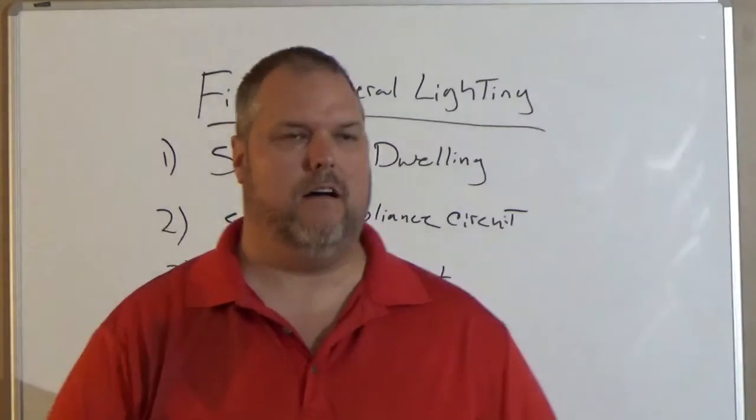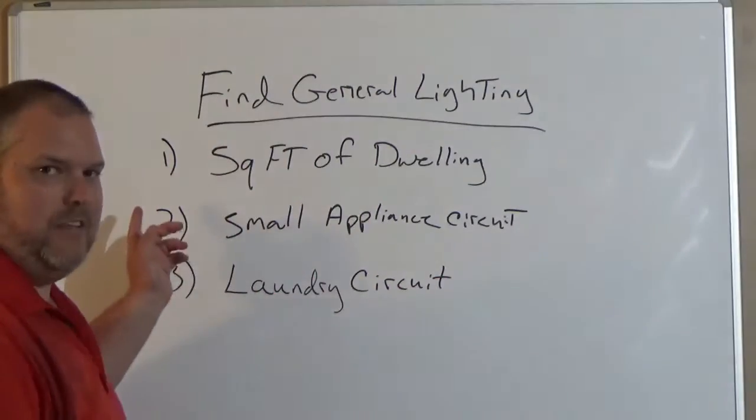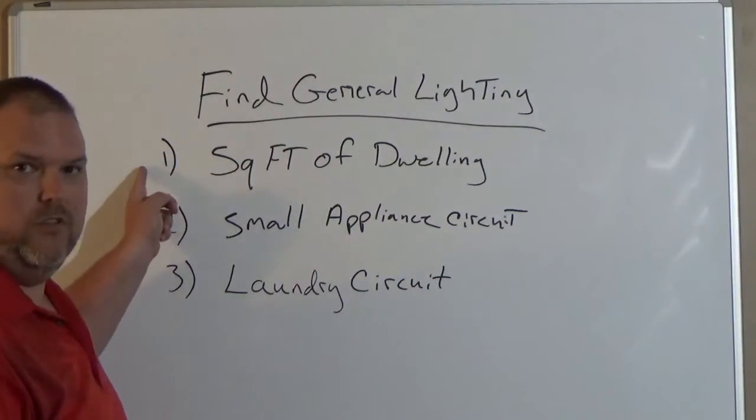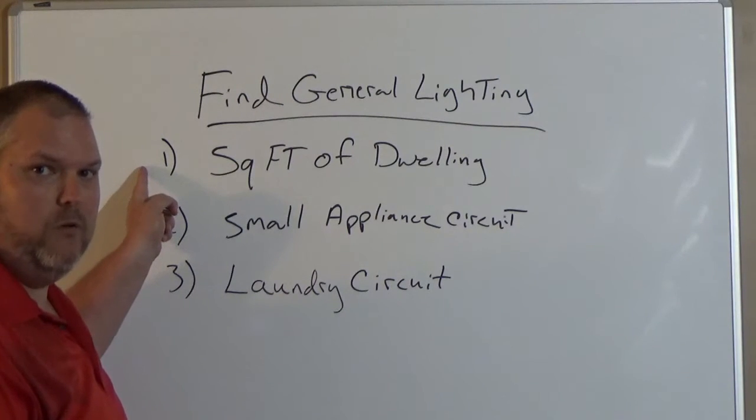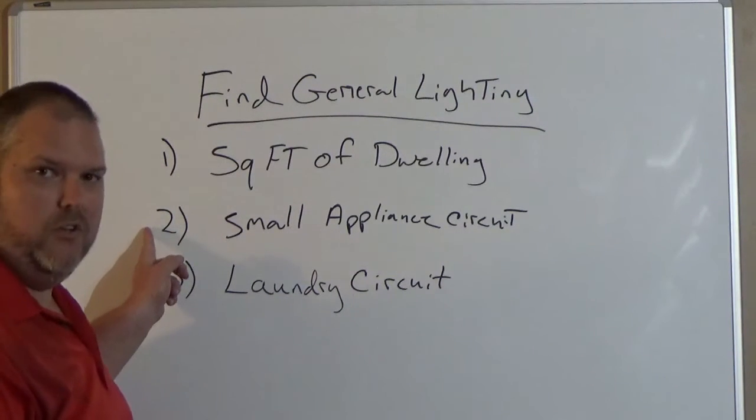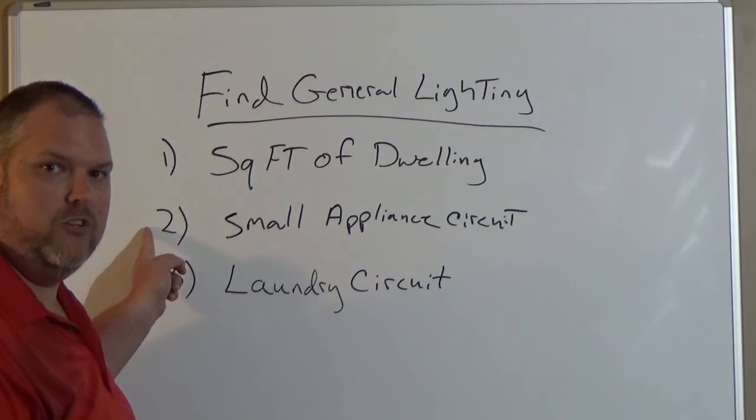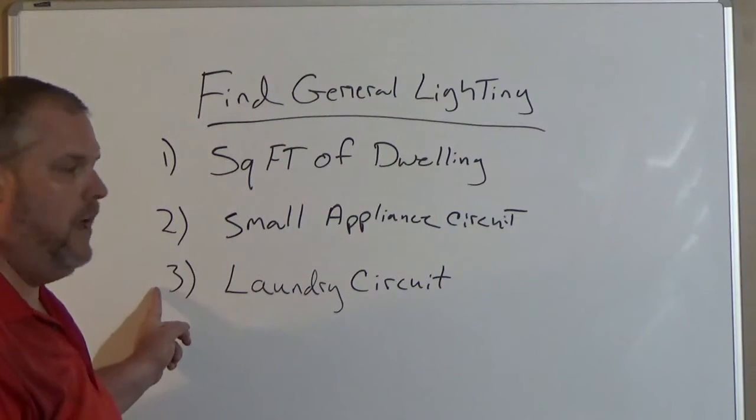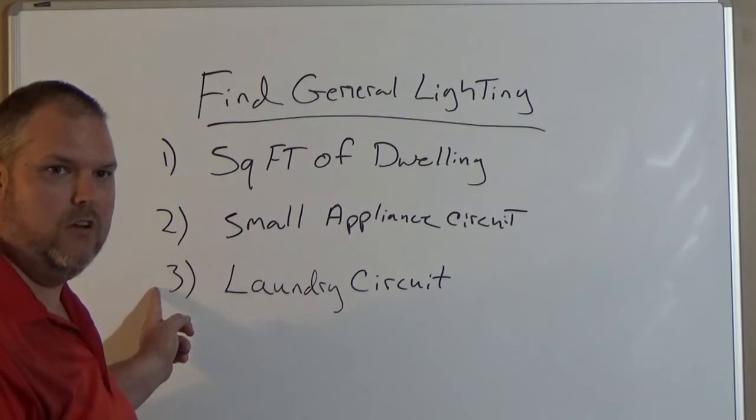In order to size general lighting, you have to know the square footage of the dwelling you're going to be working on. You need to know how many small appliance branch circuits you're going to need, and you need to know about how many laundry circuits you're going to install.